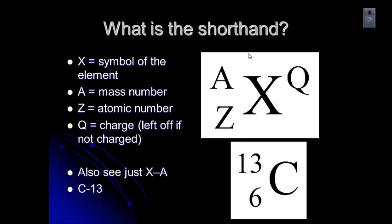Sometimes you always see just the symbol with a dash and the mass number. So you might see it written as C-13. Or when we talk about like radioactive carbon dating, it's carbon C-14.